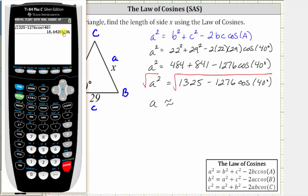Notice in the fifth decimal place there's an eight, which means you round up. A is approximately 18.6421 units.